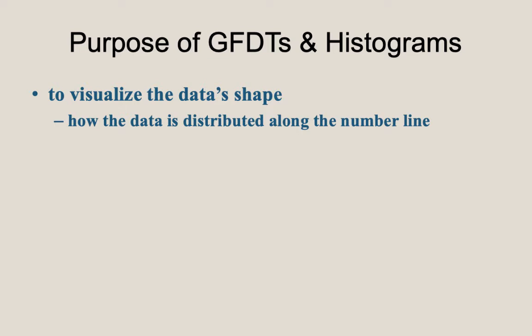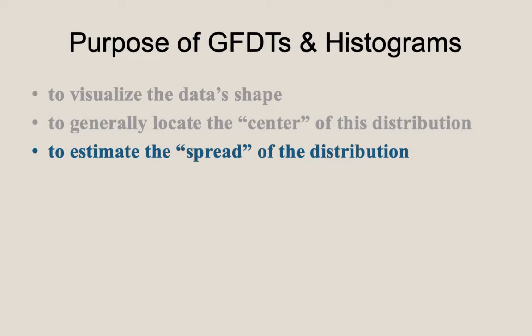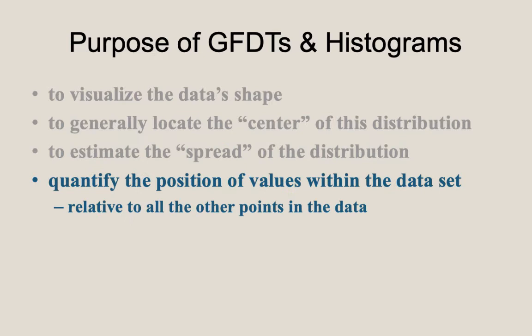Let's recall the purpose of a GFDT, a grouped frequency distribution table, or of a histogram, which is just the bar graph used to represent a GFDT. There are numerous purposes for these plots, including visualizing the shape of the data, more specifically how the data is distributed along the number line over the range of the data, locating the center of the distribution, measuring and depicting the spread of the distribution. And then, once we have these locations and measures, we can start to talk about the position of distinct data points within the data set, relative to the other points in the entirety of the data set.